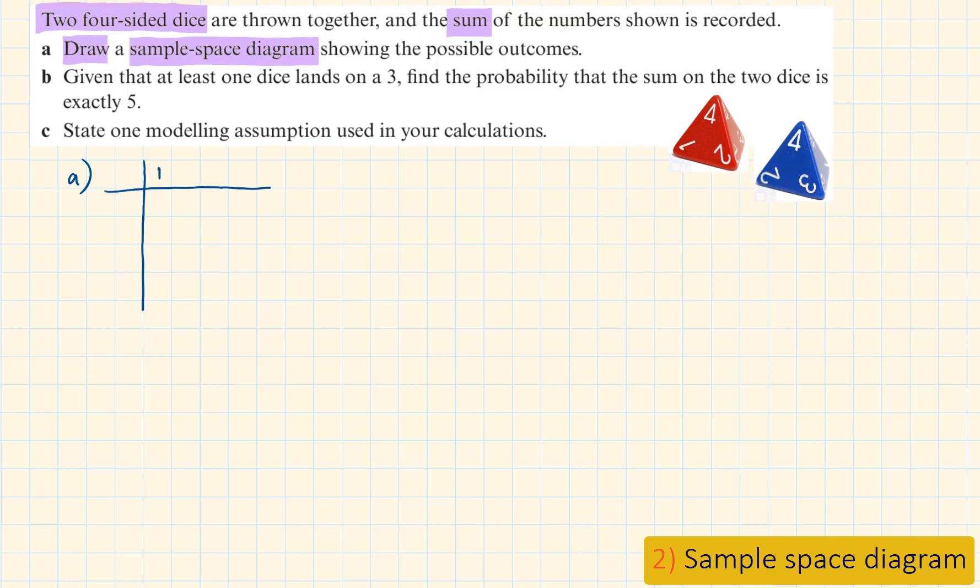The numbers of a four-sided dice are 1, 2, 3, 4 for both of them. So these are going to be the labels of the columns and the rows. 1 plus 1 is 2, 2 plus 1 is 3 and so on until we fill in all the sums in this sample space diagram.